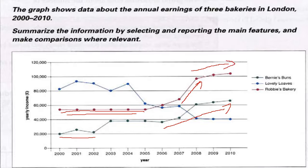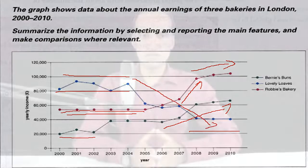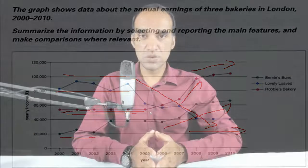The last detail is of Lovely Loops. Its income had some rise and fall for the first four years, and then it kept falling to £40,000. Lastly, its income remains stable in the last few years.